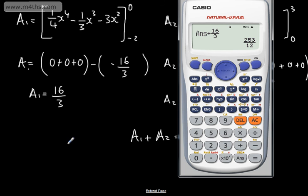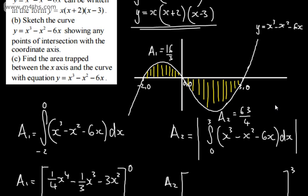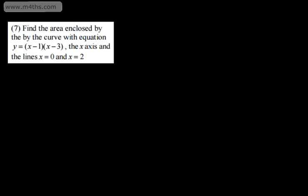There we go — nice and logical, nice and straightforward. Do you need all of those workings in the exam? Find out from your exam board or the teacher you're working with — for me, it just shows exactly what I'm doing. In question 7, we need to find the area enclosed by the curve y = (x - 1)(x - 3) and the x-axis, between the line x = 0 and x = 2.